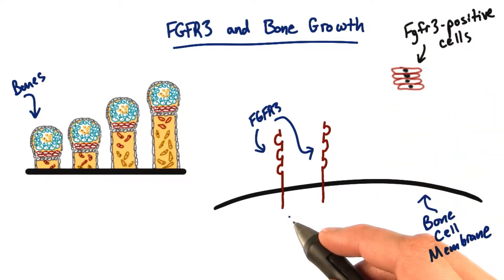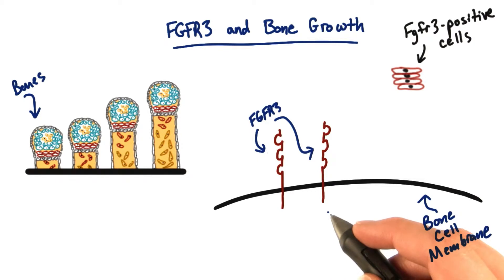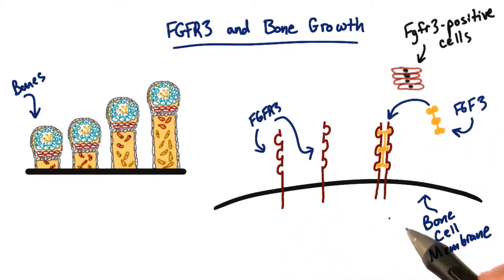Now, if there are two FGFR3 proteins like this, they're considered inactive. Nothing is happening, because the only way the FGFR3 protein can do anything is if it's bound to its favorite partner protein, FGF3.